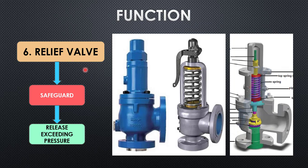The sixth valve is the relief valve, also known as a safety valve, which safeguards the system by releasing excess pressure. It contains a spring set to a specific pressure. If the piping system pressure exceeds the spring's set pressure, the spring opens the valve and releases the excess pressure. It is also known as a pressure safety valve.